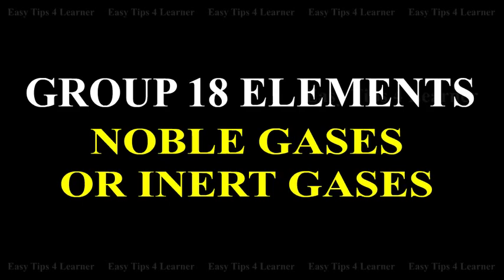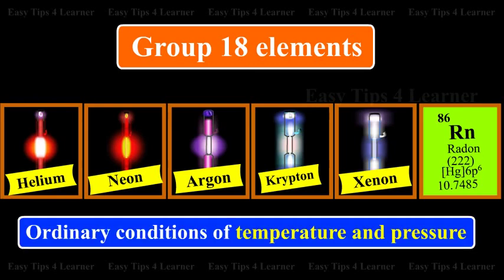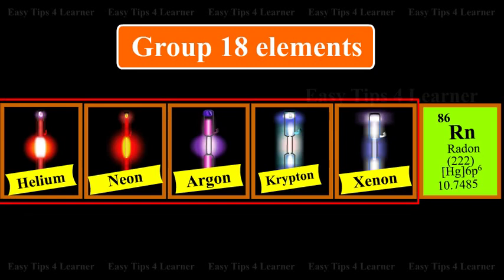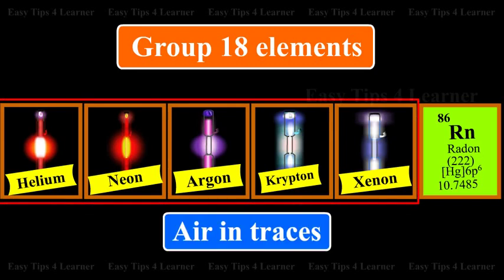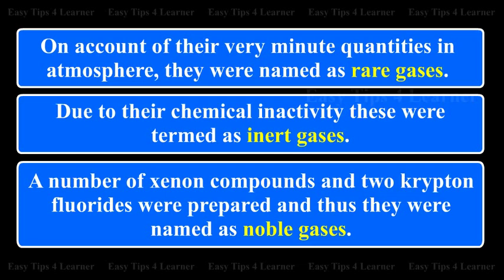Group 18 — noble gases or inert gases. Group 18 of the periodic table consists of helium, neon, argon, krypton, xenon, and radon. All these are gases under ordinary conditions of temperature and pressure. All of them except radon are present in air in traces. Radon is obtained from the radioactive disintegration of radium.